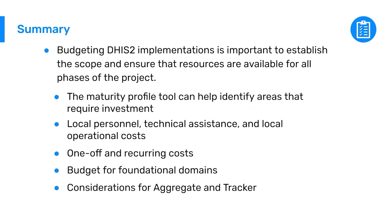In summary, building a budget for a DHIS2 implementation is really important to establish scope and ensure resources are available for all phases of the project. The maturity profile tool can help identify areas requiring investment. Remember to account for local personnel, technical assistance, and local operational costs; the difference between one-off and recurring costs; budgeting for foundational DHIS2 domains; and the different considerations for aggregate versus tracker implementations.